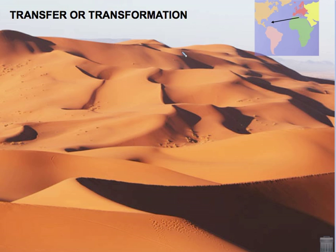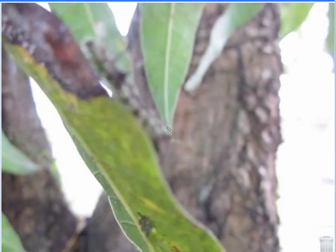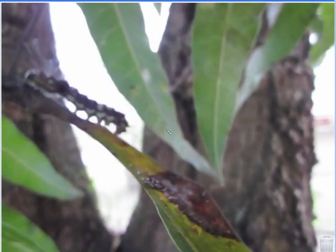In the Sahara Desert, sand sometimes gets taken by wind all the way across the Atlantic Ocean to the Caribbean and to the Western Hemisphere. This Sahara dust is an example of a transfer because there is no change of state or form.